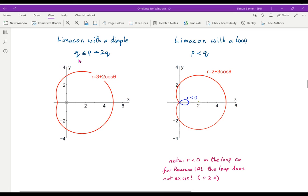In this case, if p lies between q and 2q, so p is between, that's 3 is between 2 and 2 times 2. Now we get a limousine with a dimple.